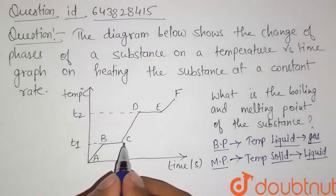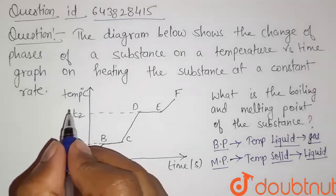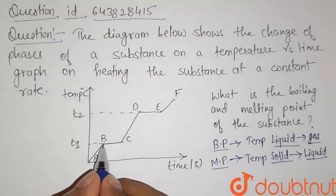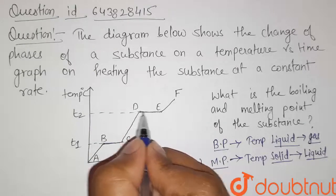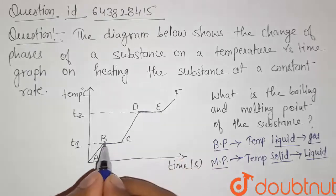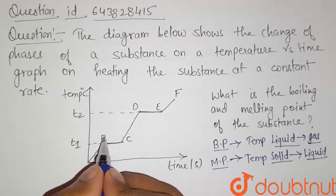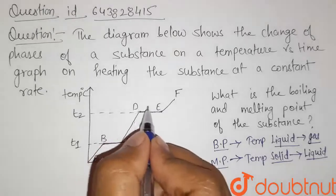Now, here in this figure we can see that the temperature in this temperature vs time graph is constant for two places. That is for some time this temperature is constant at these two intervals, that is from B to C and from D to E.